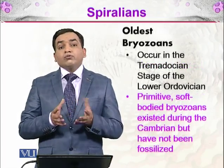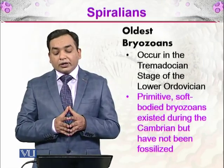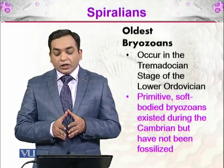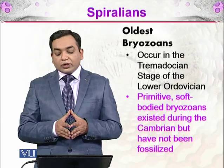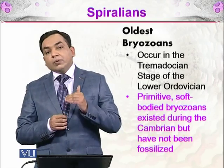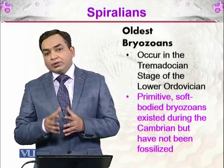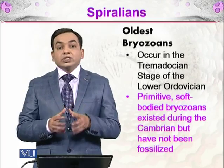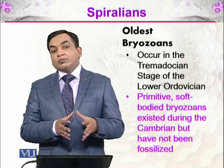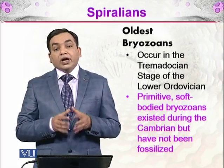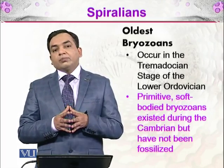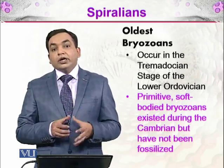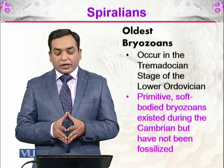The oldest bryozoans found occurred in the Tremadocian stage of the lower Ordovician. Some primitive soft-bodied bryozoans existed during the Cambrian, but these were not able to be preserved. The Tremadocian stage fossils are preserved and visible to us. However, there may have been bryozoans present earlier in the Cambrian era, but because they were soft-bodied, their fossil record does not exist.